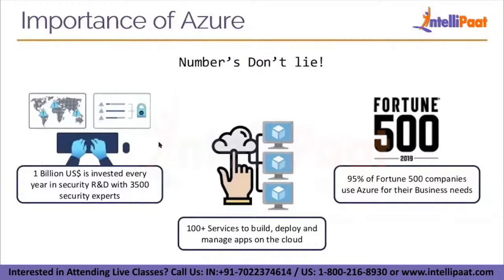Azure has 100+ services to build, deploy, and manage apps on the cloud. Managing apps and services on-premise is difficult, but Azure gives around 100 ways to develop and deploy apps to cloud services. Out of the Fortune 500 companies, 95% — around 475 companies — use Azure for their business needs, whether for servers, application deployment, or identity management.